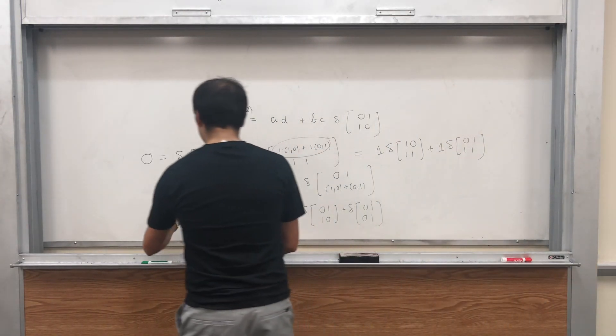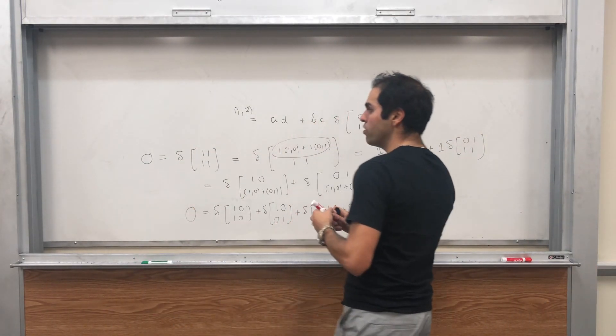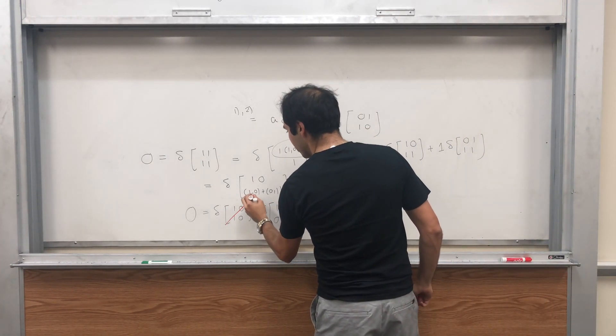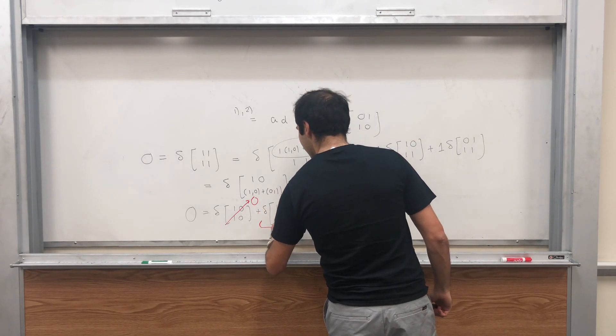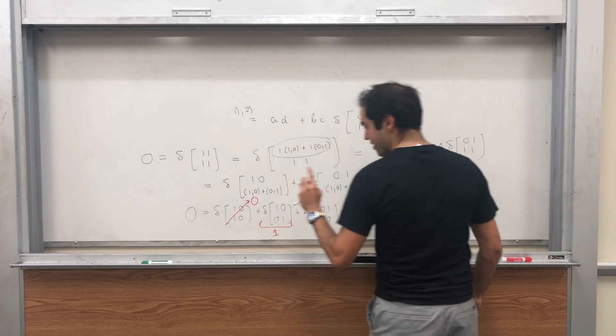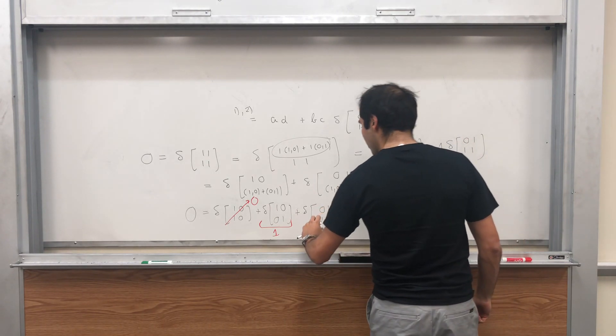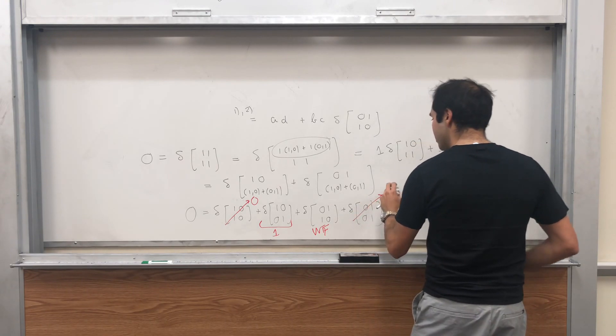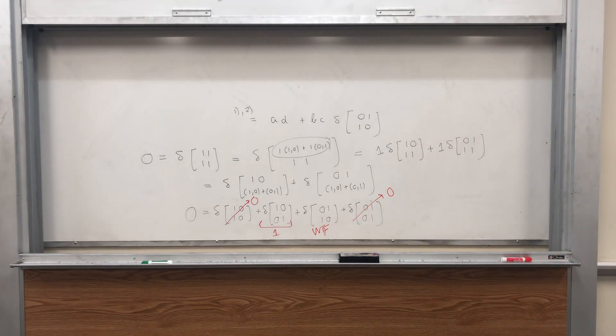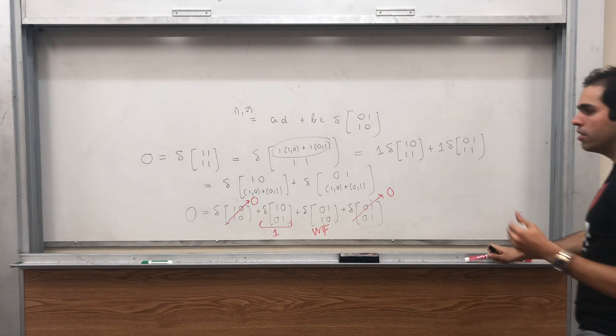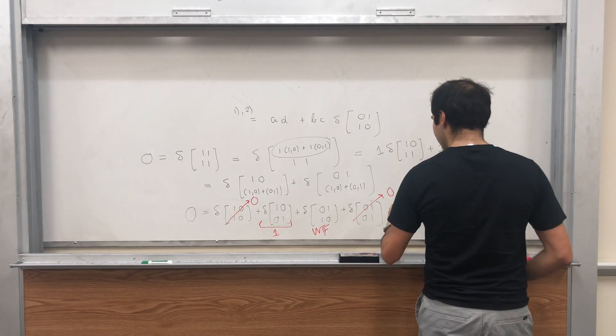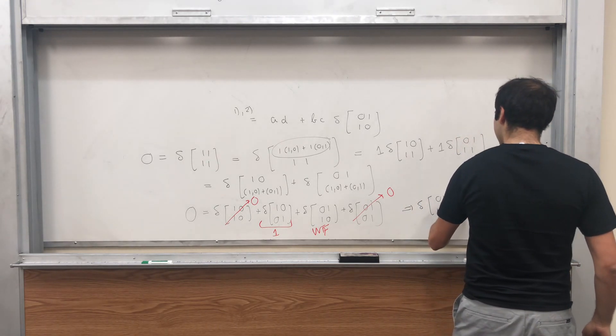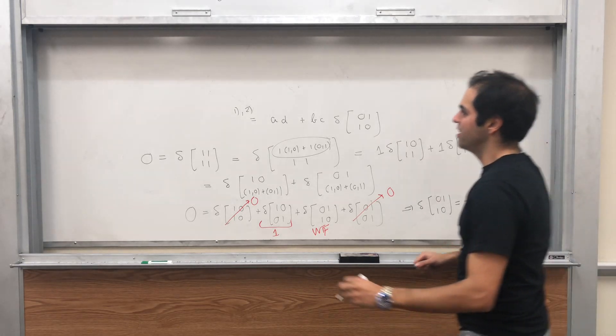It looks horrible, but a lot of stuff simplifies. We know this whole thing is 0, but this one has two identical rows, so it's 0. This one is the identity, so delta of the identity is 1. This is what we want to find, and this has two identical rows, so it's 0. So what do we have? To find plus 1 is 0, so to find is minus 1. So delta of 0, 1, 1, 0 equals minus 1.